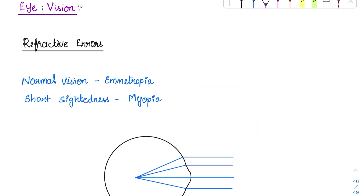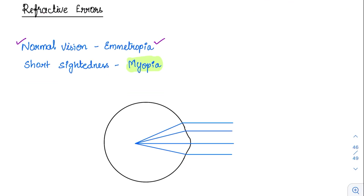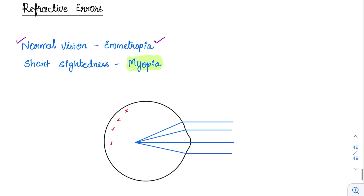Now coming to vision. The refractive errors are very important. Normal vision is called emmetropia. For a person with short-sightedness — myopia — they can see nearby objects but far-off objects are not visible. The basic problem is that the eyeball is usually larger, causing rays entering the eye to focus in front of the retina.